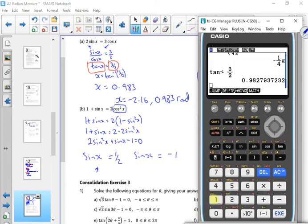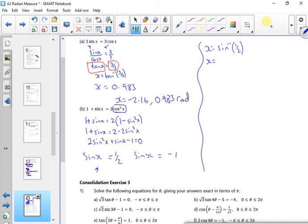So menu 1. Shift, sign, 0.5. So if it's 30 degrees, it's neither. So 30 degrees will be pi by 6. There, there we go, pi by 6.